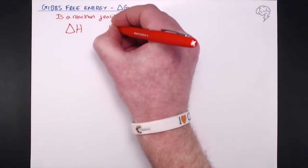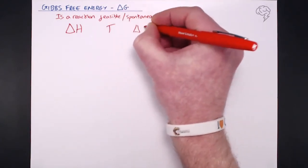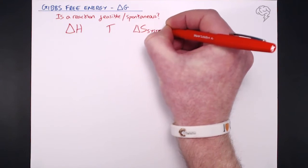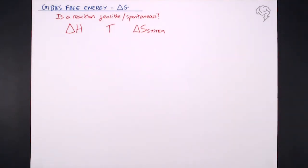Exothermic reactions are more likely to happen. Temperature is also important — reactions are more likely to happen at high temperature. And of course entropy: if there's an increase in entropy, the reaction is more likely to take place. So it's really a balance of all three of these things that contribute to an overall view of whether a reaction is going to be feasible or not.